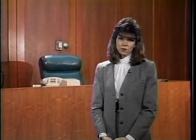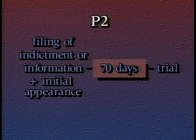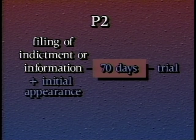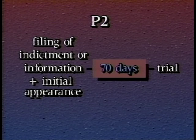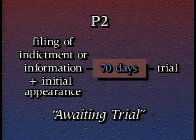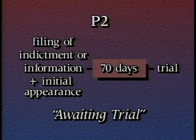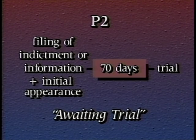The filing of the indictment moves the defendants from P-1 to P-2. Procedural interval 2 covers the time interval between the filing of an indictment or information against a defendant who has had an initial court appearance and the start of trial. P-2 is often called awaiting trial, and its time limit is 70 days — also referred to as the 70-day clock.